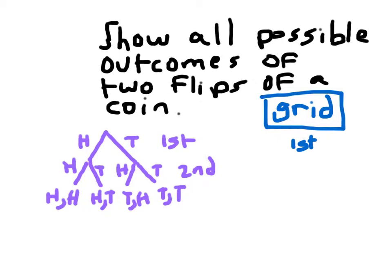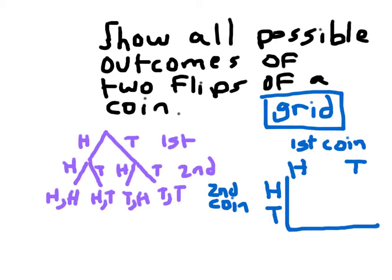For the columns, I'll go ahead and write out the first coin and the two possible outcomes for that first coin, which are heads and tails. For our rows, I'm going to go ahead and write down for the second coin our two possible outcomes, which are heads and tails.